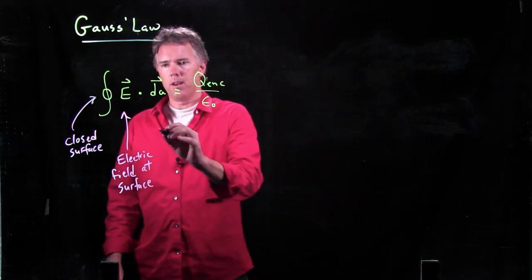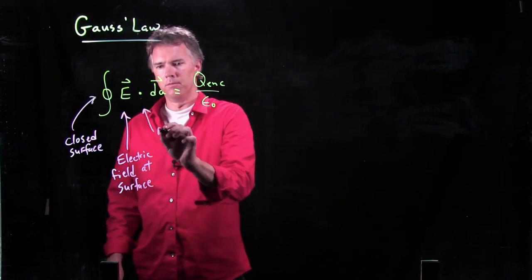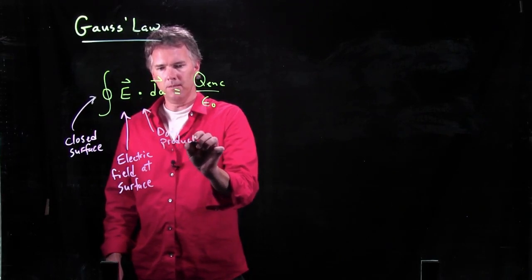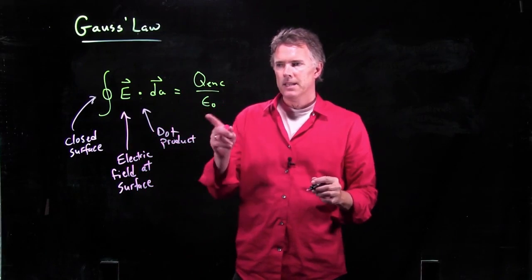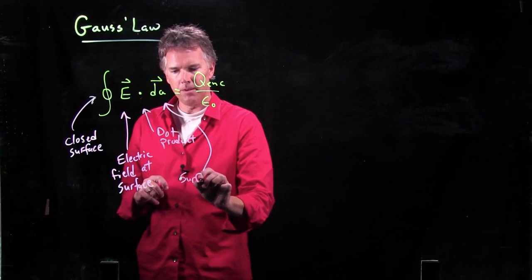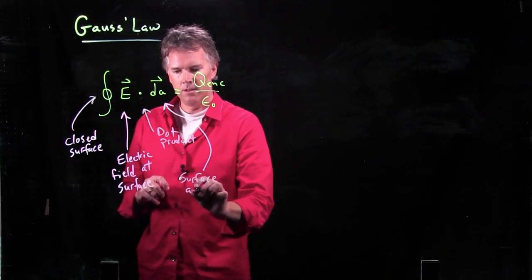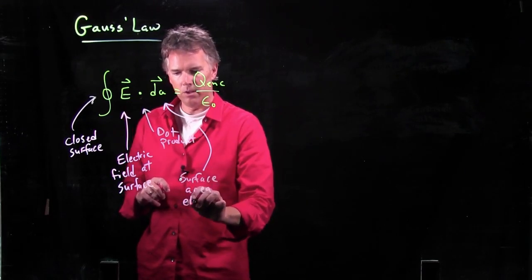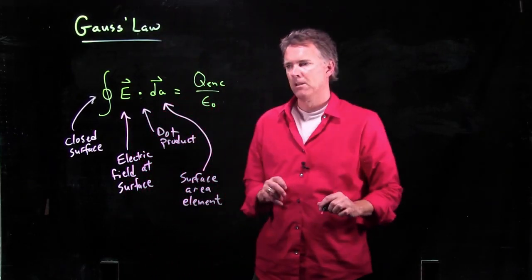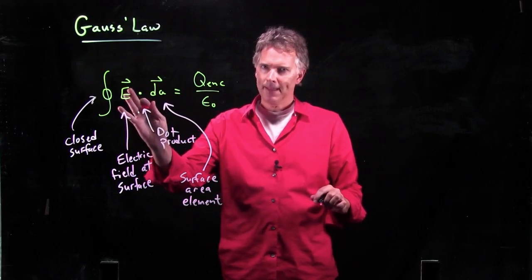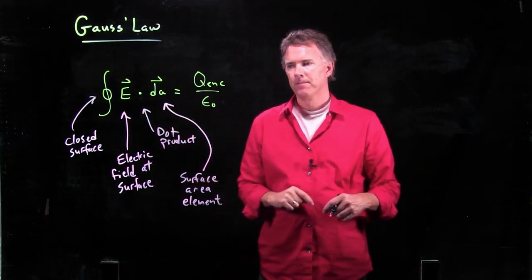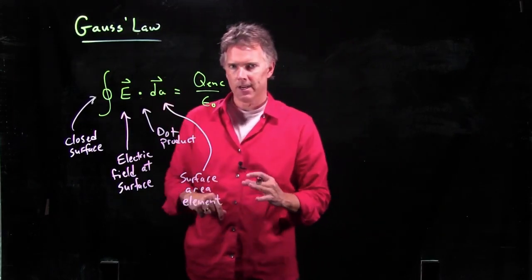Dot product, we know what that is, and we know how to deal with that mathematically. dA is a surface area element for that particular closed surface. So we need to dot the electric field at the surface with the little surface area element, and then we have to integrate over the entire closed surface.